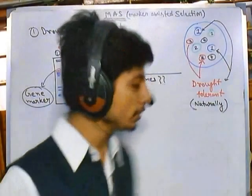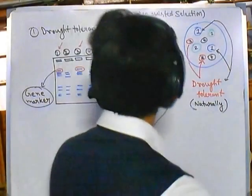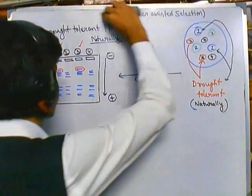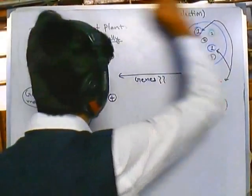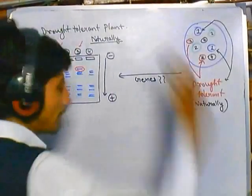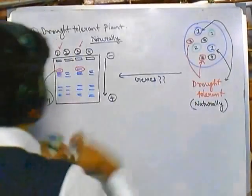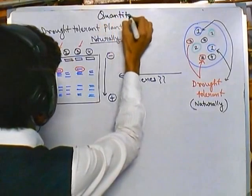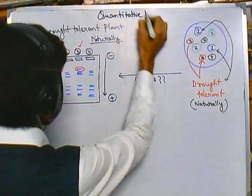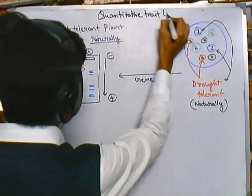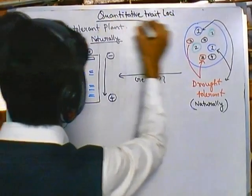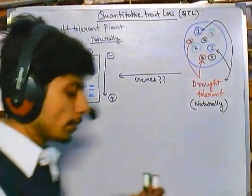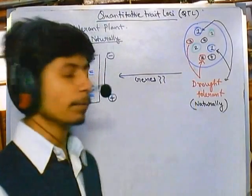In the previous video we talked about marker-assisted selection, which will be required in this video as well, because in this video we'll be talking about quantitative trait loci mapping, or QTL mapping.